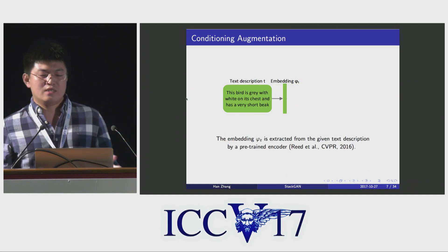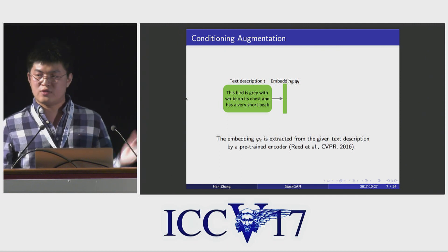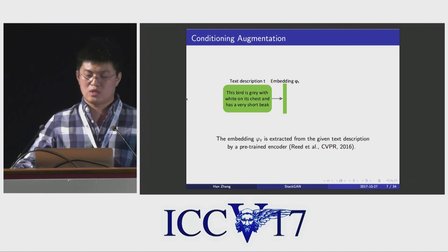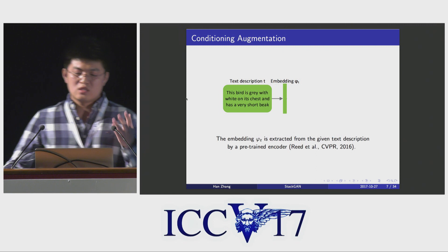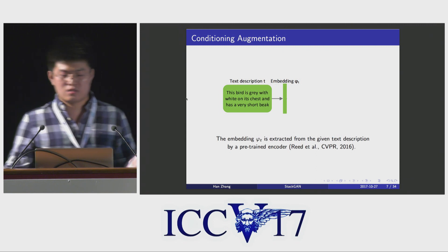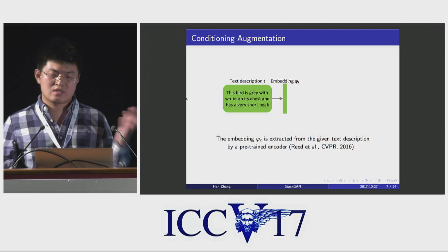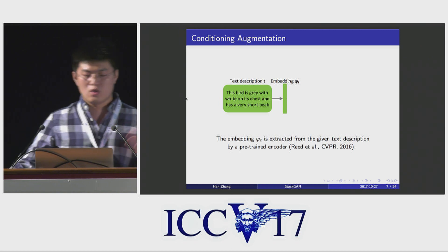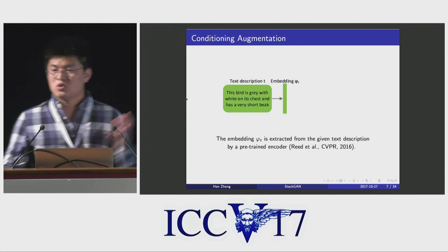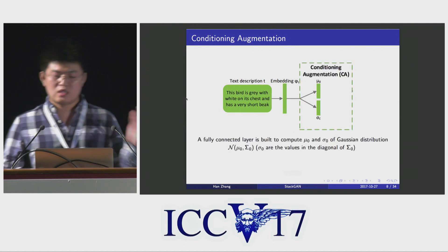As the start of the pipeline, given a text description, a global sentence embedding is first extracted using a pre-trained text encoder, such as character-level CNN-RNN. However, the sentence embedding is usually high-dimensional, and given a limited amount of training data, this usually causes discontinuity in the latent manifold, which is not desirable for learning the generator. To mitigate this problem, we propose conditioning augmentation.